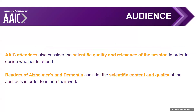You really want to think about how your work will benefit AAIC attendees and how it will change or influence them. AAIC attendees look at the program year after year to decide if this is the conference for them, so the quality of your science really makes a difference. For abstracts selected for publication in Alzheimer's and Dementia, this also influences the scientific community, potentially shaping the future of their work based on what you present at AAIC.